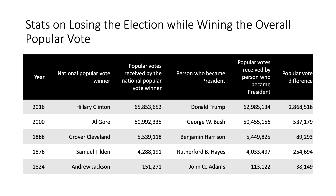In 1876, Samuel Tilden won the most popular votes; however, Rutherford Hayes won the majority of the electoral college vote. It is an election controversial to this day. A bipartisan committee with one more Republican than Democrat gave the election to Hayes, and the decisive state in question was Florida — just as it would be again in the year 2000. Hayes thus became president despite Tilden winning the popular vote.